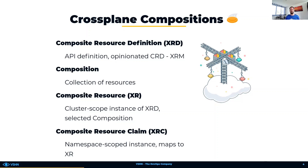A composite resource is the cluster scope object to instantiate a custom service implemented by the selected composition. And with the composite resource claims, the user of the platform specifies the infrastructure needs on a namespace scope. This can be done, for example, together with the application deployment. By splitting cluster scope and namespace scope objects, security constraints can be easily implemented with RBAC rules, and it allows for a separation of concern between the platform user and platform operator.